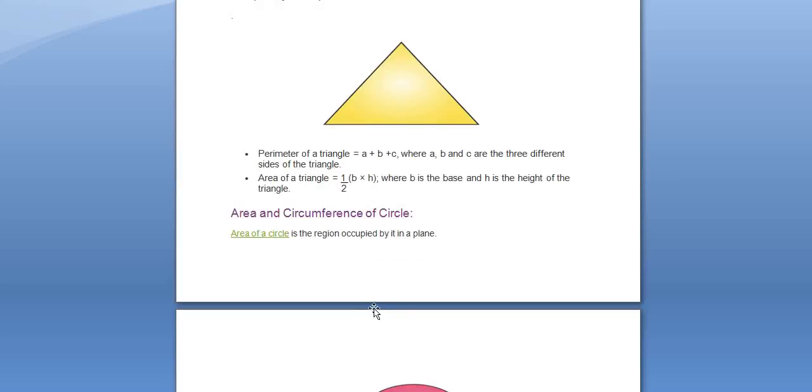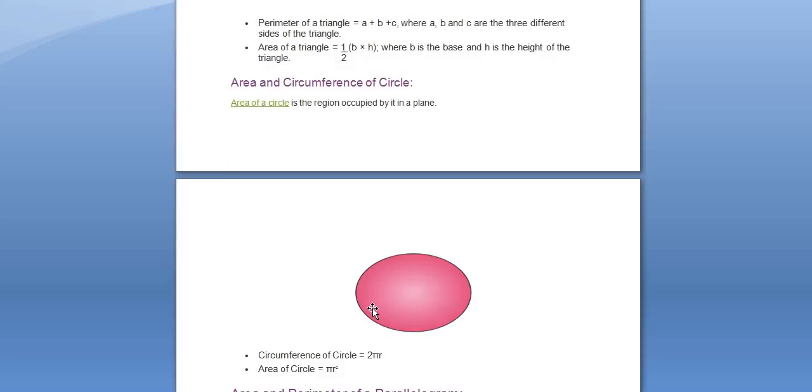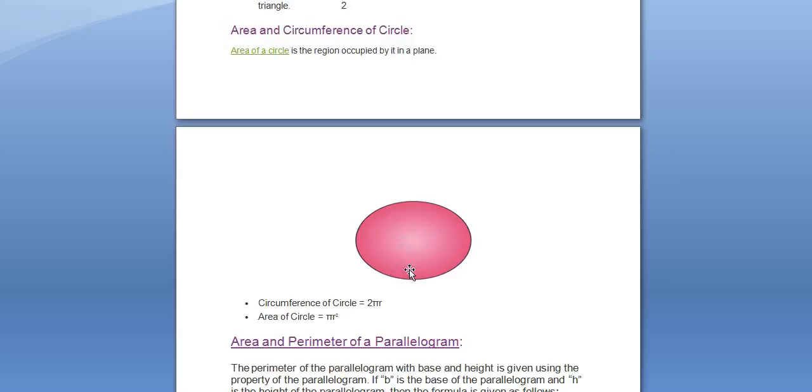Moving on towards the circle part. The area of the circle is basically the region occupied by it in this plane. Circumference is given by 2 pi r where r is the radius, and area of the circle is given by pi r square where r is the radius.